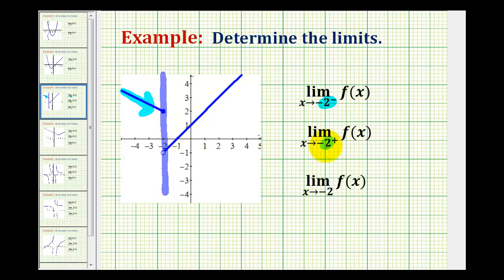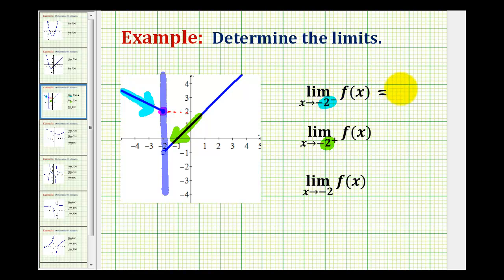For the second limit we're approaching negative 2 from the positive side, or the right side, so we're approaching negative 2 along the function here. To determine the limit we want to find what function value we're approaching as we approach negative 2 from the negative or left side — the y value we're approaching. As we get closer and closer to negative 2 from the left side, we're approaching this function value right here, which we can see from the graph would be positive 2. So this left-sided limit is equal to positive 2.